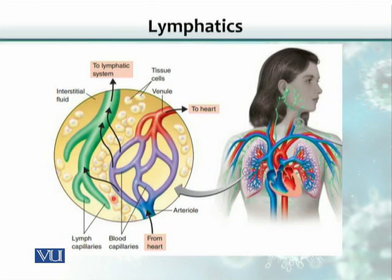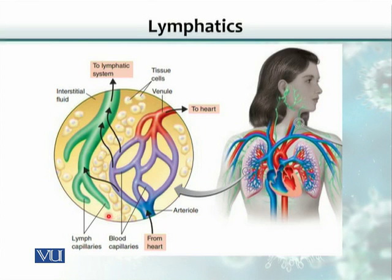Fluid and proteins, along with all kinds of cells including macrophages, lymphocytes, and even bacteria, are drained back to the heart. Lymphatics, along their way, have special structures called lymph nodes that filter out the lymph. Lymph is basically fluid residing in the tissue spaces. That extra fluid, which would otherwise keep accumulating, is drained through these lymphatics.